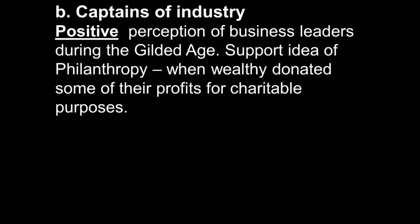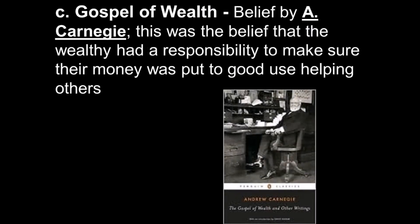There are two ways to view people like J.P. Morgan, Andrew Carnegie, Vanderbilt, and the rest. The positive view is that they are captains of industry — a positive perception of business leaders during the Gilded Age. They supported the idea of philanthropy, where wealthy people donated some of their profits to charitable purposes. Carnegie and Rockefeller, in the later years of their lives, were almost in competition to see who could give away the most money to charities. Carnegie wrote the book The Gospel of Wealth — a belief that if you were wealthy, you had a responsibility to do good and help others. By gaining wealth and power, it was your job to help out the rest of the world. Give back was the essential message.